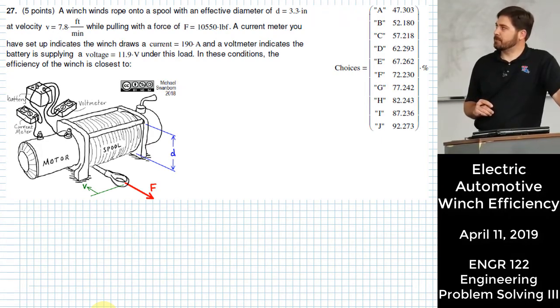It does that while it pulls with a force of 10,550 pounds. You've got a current meter and a voltmeter set up between your battery and your motor so that you can monitor the power usage of your motor. Based on that setup, it's drawing a 190-amp current while the voltage is dipping down to 11.9 volts while it's under that kind of load. So in these conditions, we want to know the efficiency of the winch.